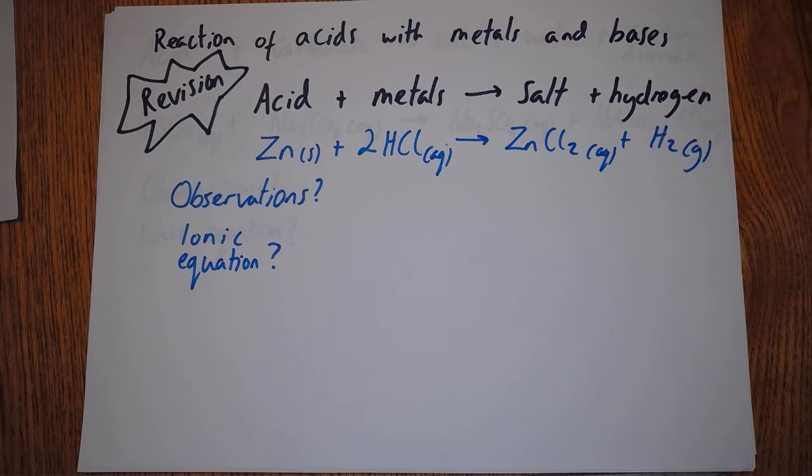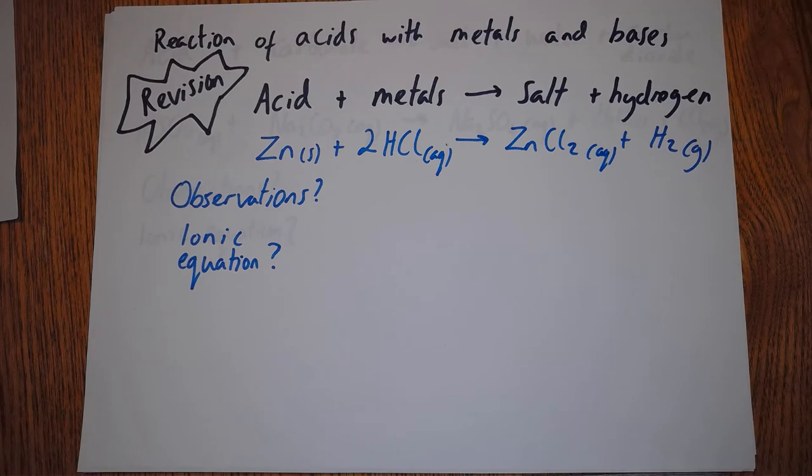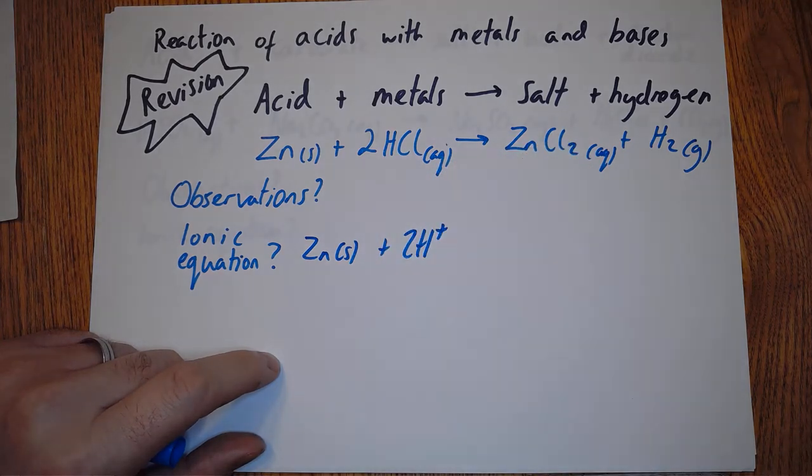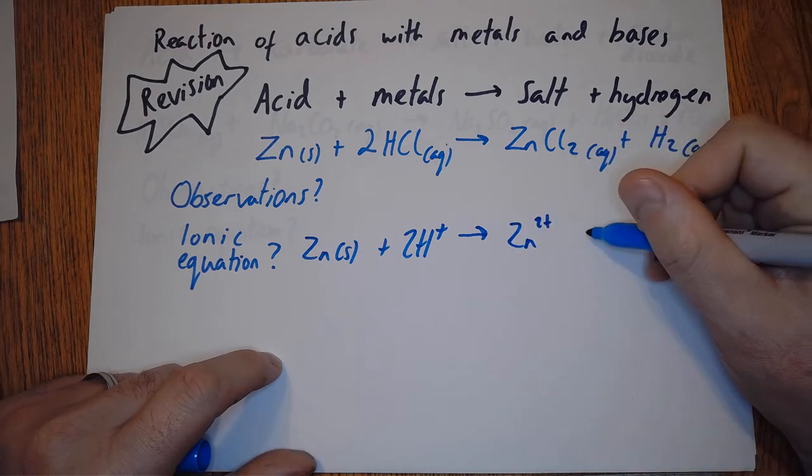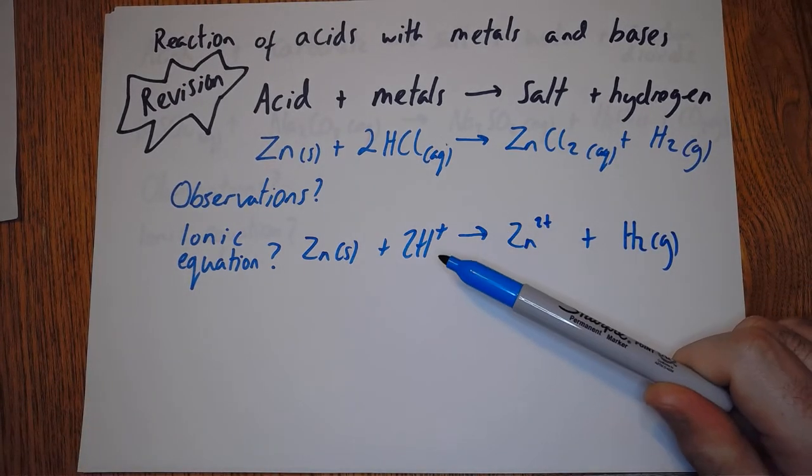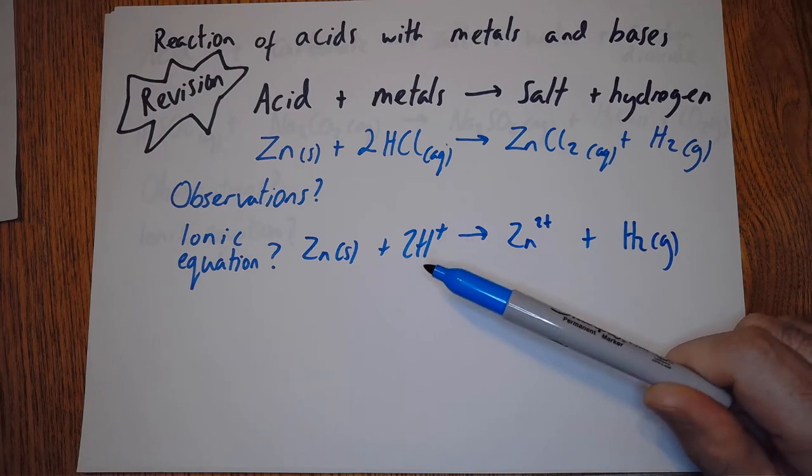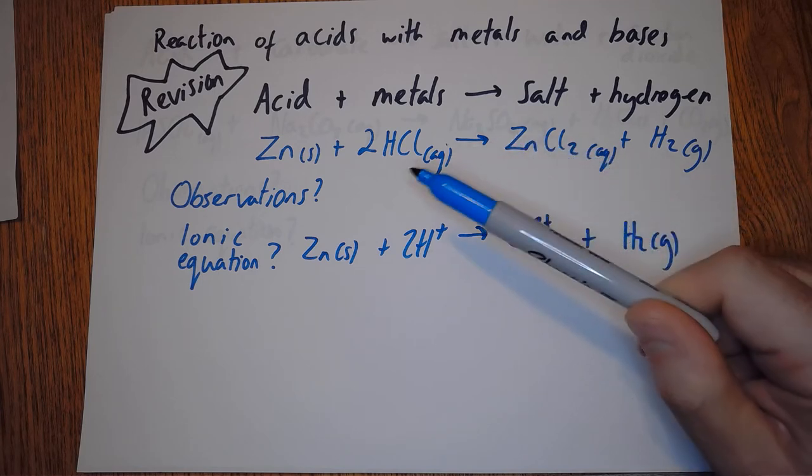The ionic equation - remember we split up everything that's aqueous and remove any ions that are on both sides. We've got aqueous chloride ions here and here, so they would cancel out. That will leave us with Zn + 2H+ going to Zn2+ and H2 gas. What this shows us is it's kind of irrelevant which acid it is - it could have been nitric or ethanoic. The H+ ions react with the metal to make a metal ion and hydrogen gas. The other part of the acid is just in solution.